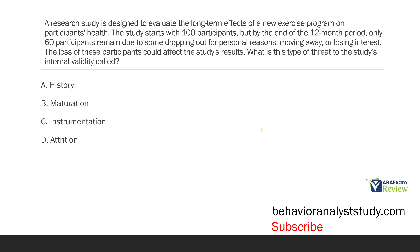A research study is designed to evaluate the long-term effects of a new exercise program on participants' health. The study starts with 100 participants, but by the end of the 12-month period, only 60 participants remain due to some dropping out for personal reasons, moving away, or losing interest. The loss of these participants could affect the study's results. What is this type of threat to the study's internal validity called? The question is about internal validity and what can threaten internal validity.